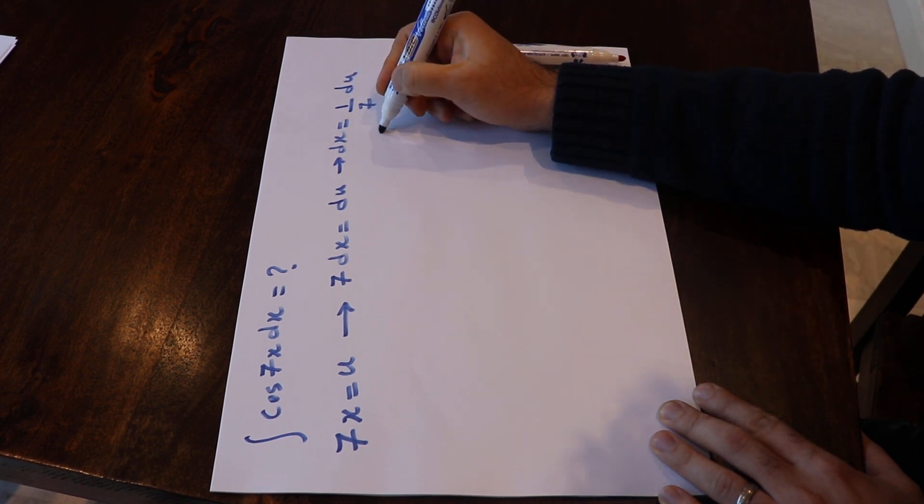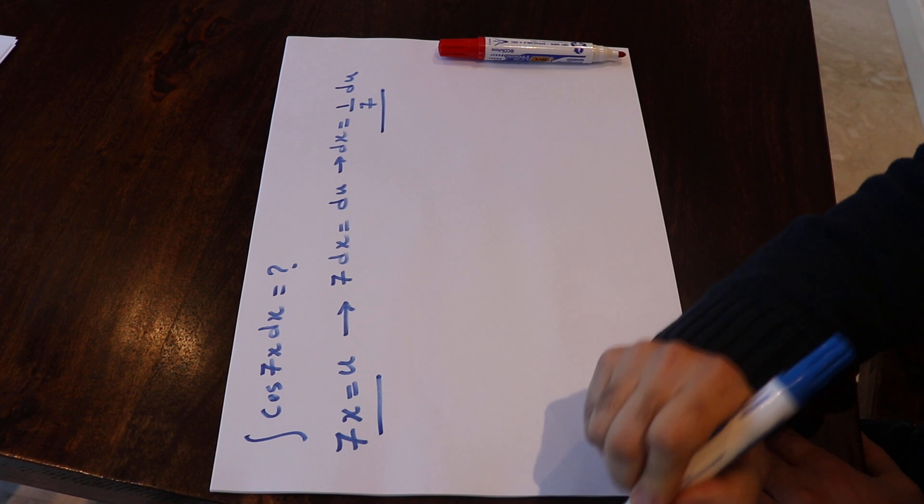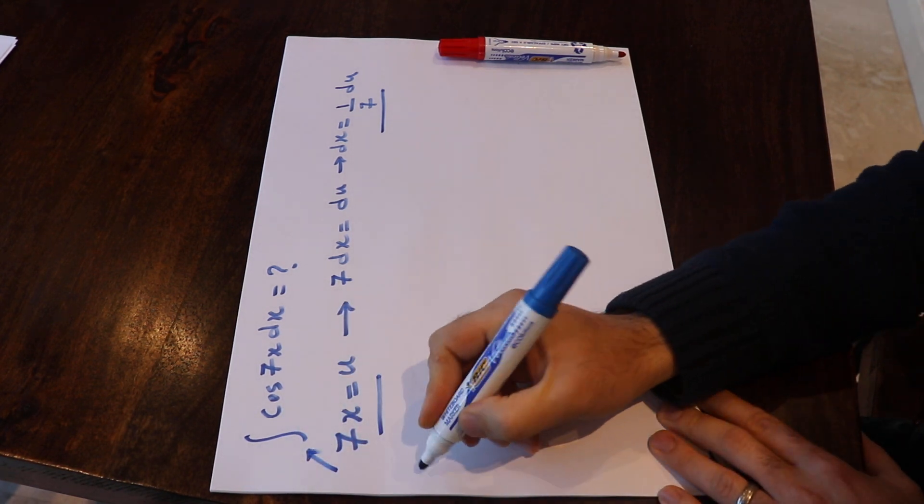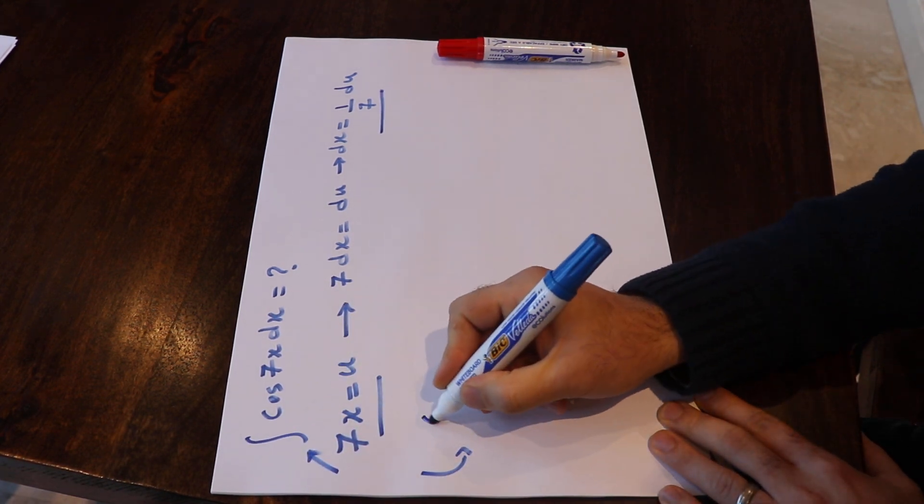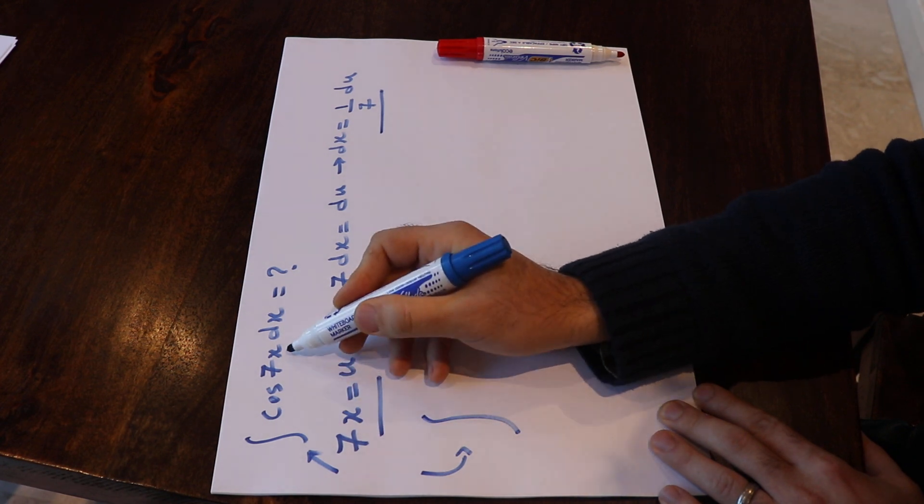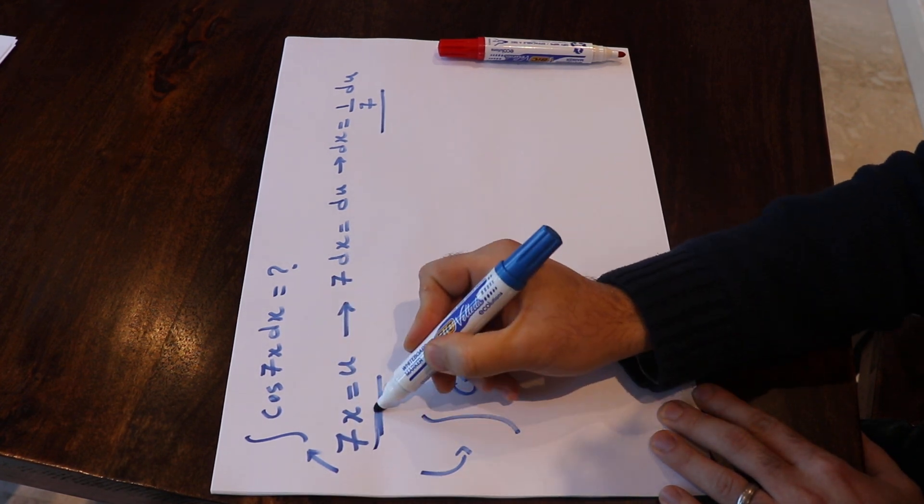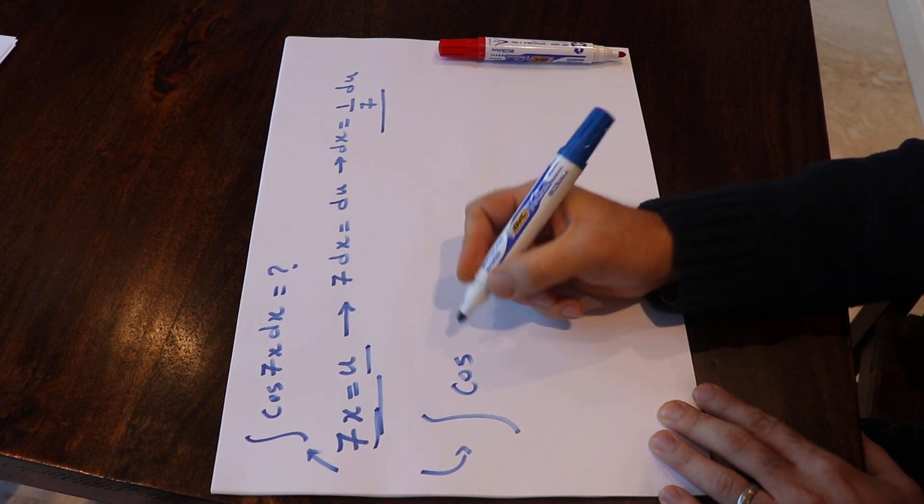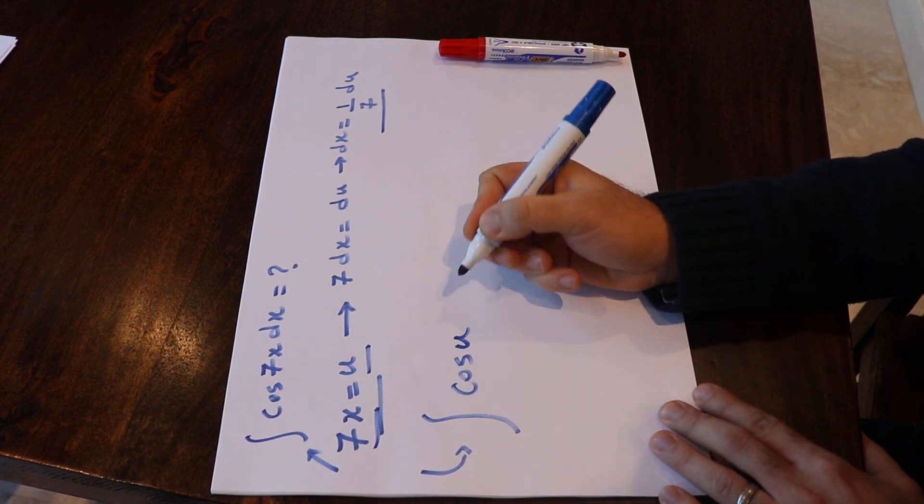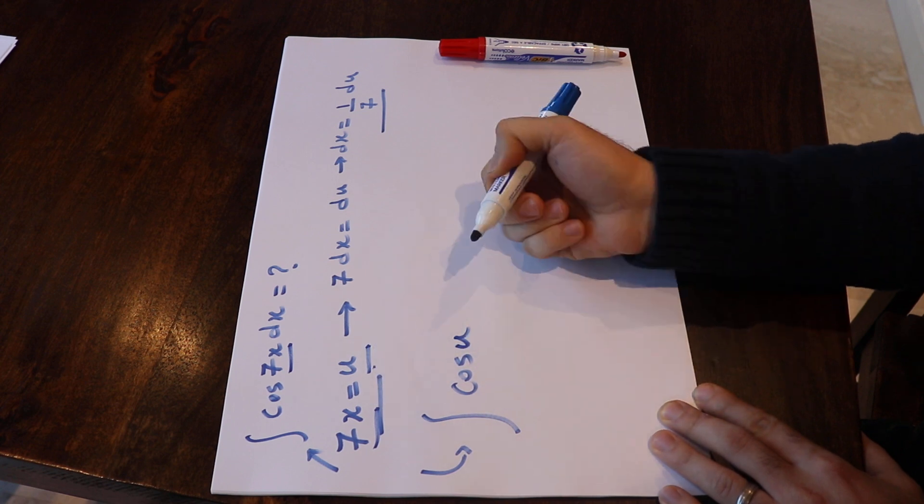So if now you substitute this into the integral, then you can rewrite this integral as... instead of cosine 7x, I write cosine u because instead of 7x I can write u. So I simply write cosine u.